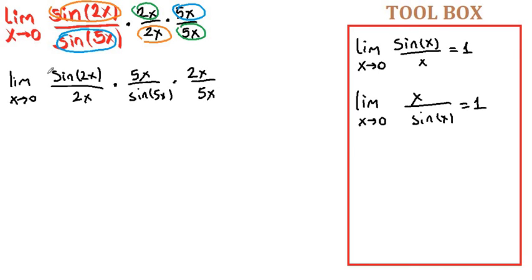It's known that this limit is equal to 1 because we have the same angle in the argument and in the denominator. This limit is also 1 and here x cancels out.